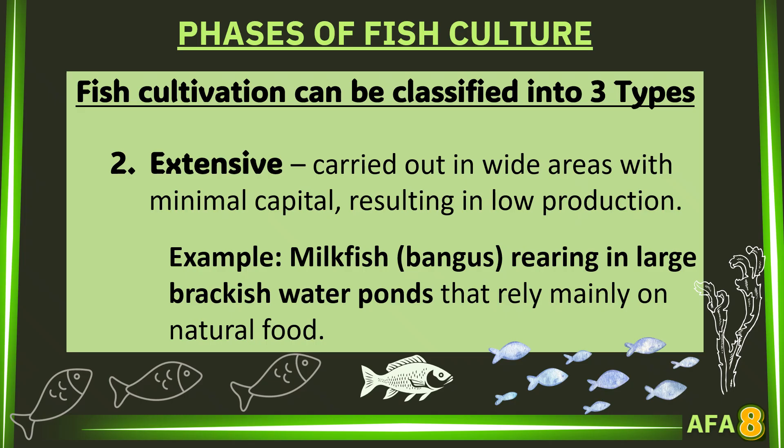Extensive fish cultivation is carried out in wide areas with minimal capital, resulting in low production. Example: milkfish or bangus rearing in large brackish water ponds that rely mainly on natural food.